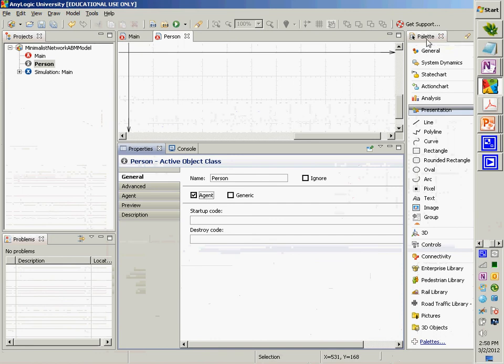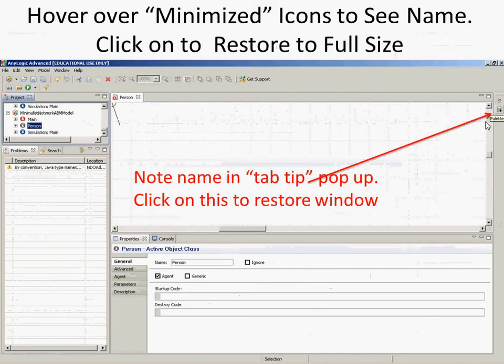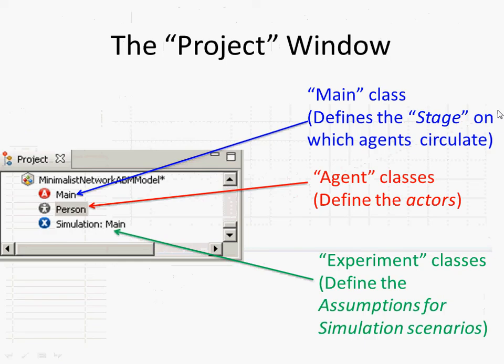If you see something like your palette has disappeared, you can hover over it and it will show what it is. Let's focus on some of the elements here in the project window.